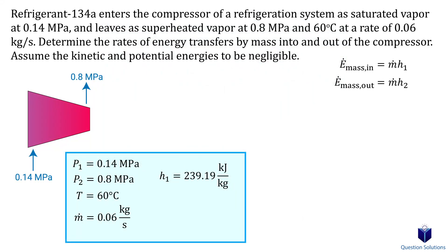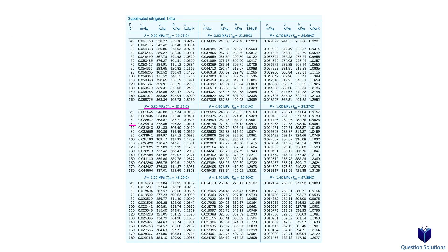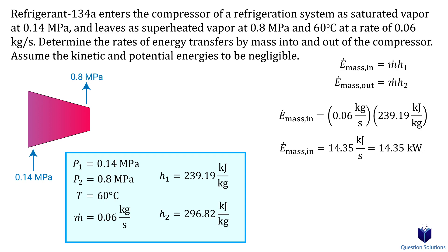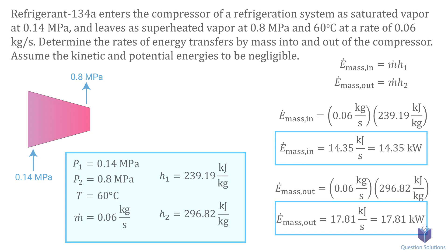For our second enthalpy value, we're told that it's a superheated vapor with a pressure of 0.8 MPa and a temperature of 60°C, so that's the value right here. Now that we have these values, we can plug them into our equations. Those are our answers.